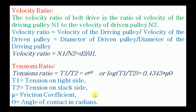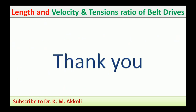The angle of contact is the angle for which the belt remains in contact with the surface of the pulley. In terms of this angle we express the tension ratio between the tight side and slack side. This tension ratio is required to calculate the tensions on each side, which in turn gives the power transmitted by the belt drive.